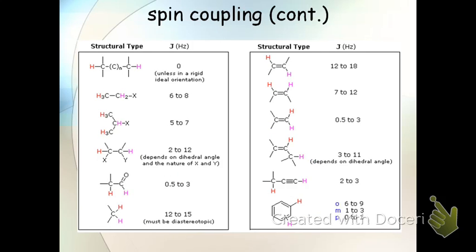Now, here's a summary of the coupling constants that you would expect to see for different types of hydrogens. In particular, the ones we just went over are the trans, the cis, and the vicinal.